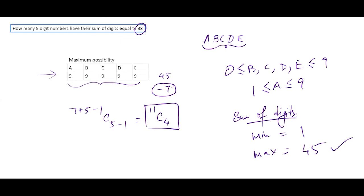We need to check feasibility: even if all 7 is subtracted from a single digit (including A), 9 − 7 = 2, which is valid. So all 11C4 cases are acceptable, and the answer is simply 11C4.